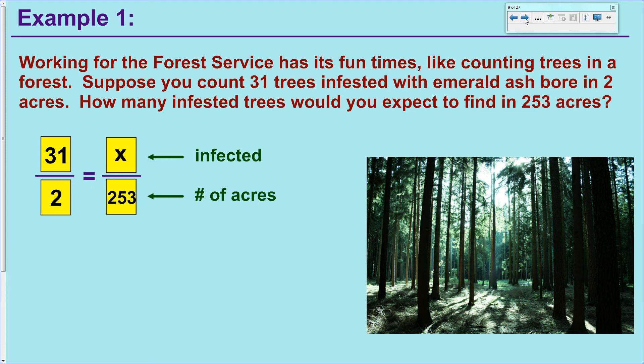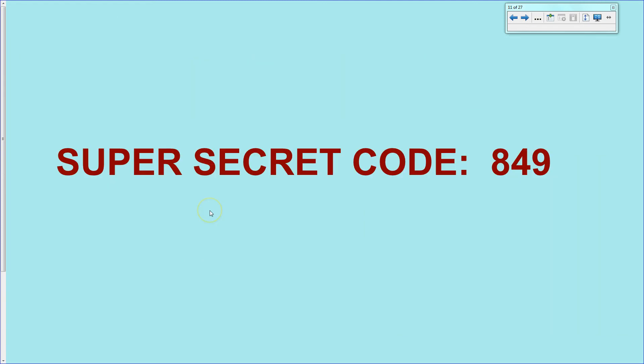From there, it's cross products and solve. So 2 times x equals 31 times 253. Divide by 2 to solve. You could ballpark it to your superior as you report to them that there's roughly 4,000 trees that are infected in that forest. It's now time for our super secret code. It is 849 today.